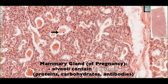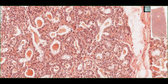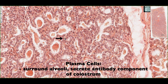We can see that the alveoli have a secretory product accumulating in their lumens. This secretory product is called colostrum, and it contains a high amount of proteins, carbohydrates, as well as antibodies. Some of the cells surrounding the alveoli have white, almost vacuolated spaces — they actually contain fatty droplets. So even though colostrum has a high component of proteins and carbohydrates, it also has a lipid component. One important cell visible here is the plasma cell, which is responsible for secreting antibodies into this colostrum.